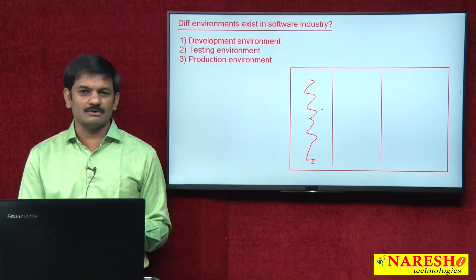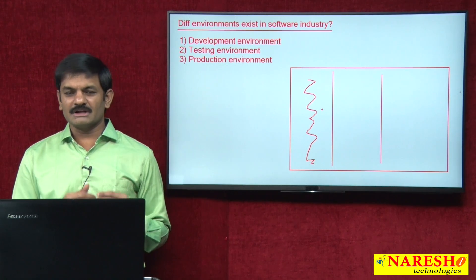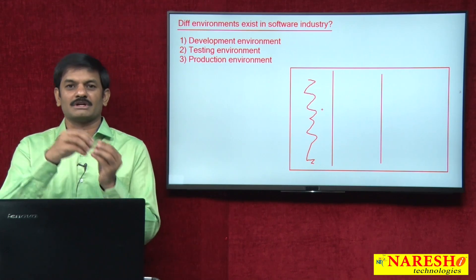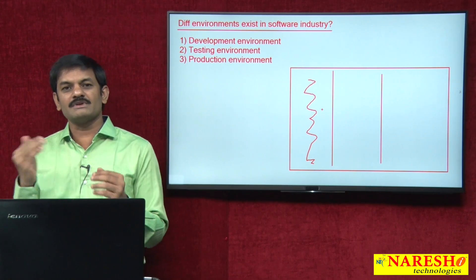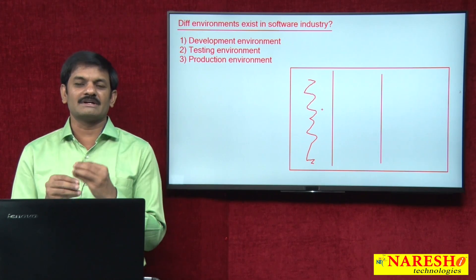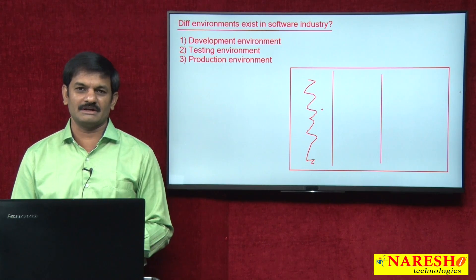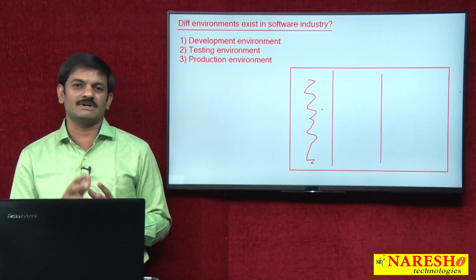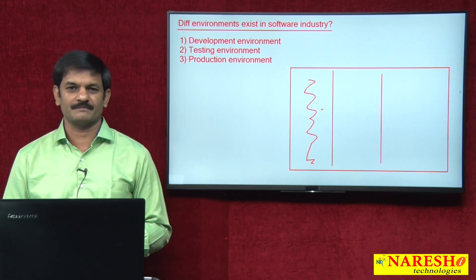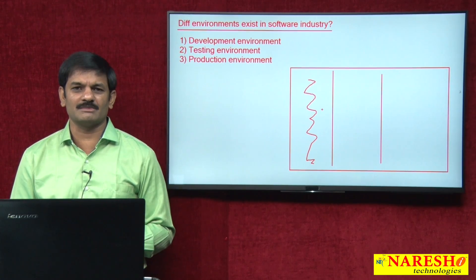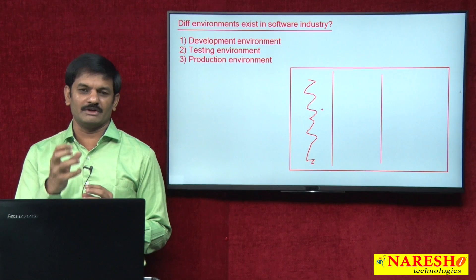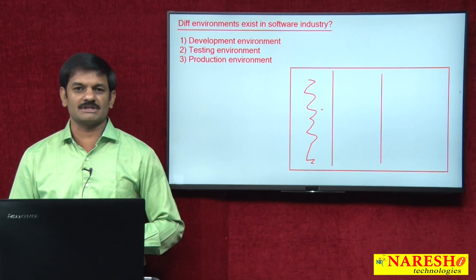Every developer develops code for their assigned task. After completing their task, they copy their code from their development computer into the common server computer. Along with other developers' code, they test their module functionality. If it is working fine, they commit their code into the CVS or SVN machine — a database-like computer where source files are saved so other developers can check out and update their project environment.